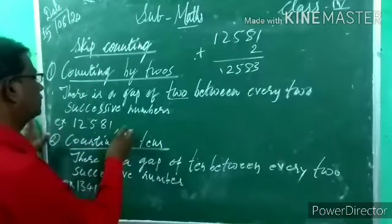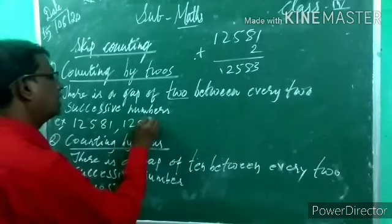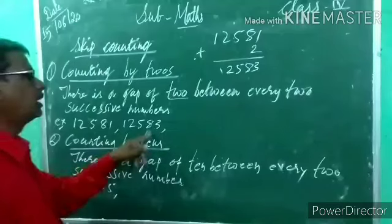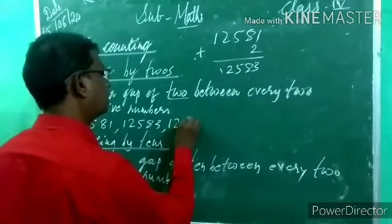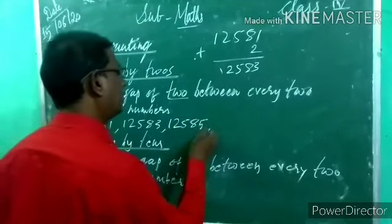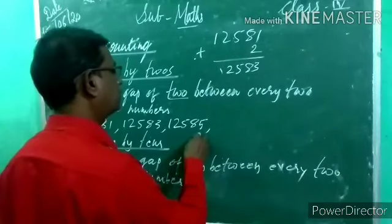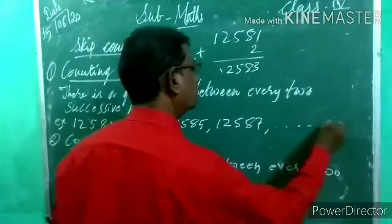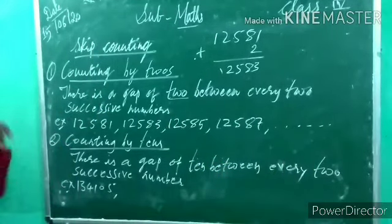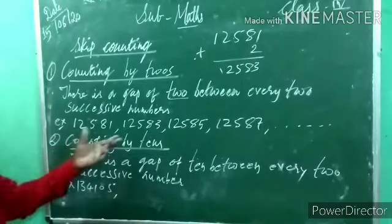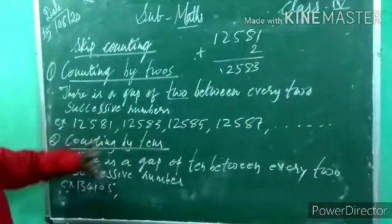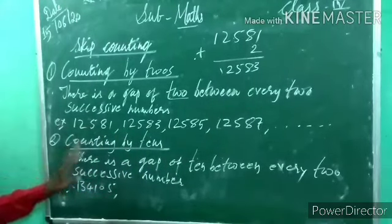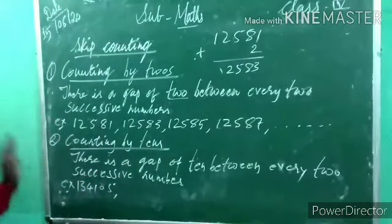Otherwise we can write directly if you know the answer: 12,583. Then 83 plus 2 is 85 — so 12,585. Then 85 plus 2 is 87 — so 12,587, and so on. In the question, only 4 or 5 numbers need to be written. No need to write up to 10 numbers. They may ask for only 3 or 4. So this is skip counting by 2, remaining digits stay as they are.